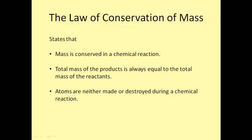This brings us to the law of conservation of mass. As we saw in the previous equation, no new atoms were formed or destroyed. The atoms simply rearranged themselves. The law of conservation of mass states that mass is conserved in a chemical reaction. The total mass of the products is always equal to the total mass of the reactants. This is because atoms are neither made nor destroyed during a chemical reaction.